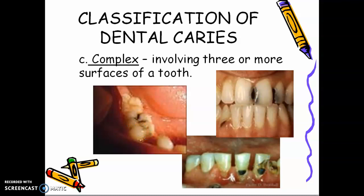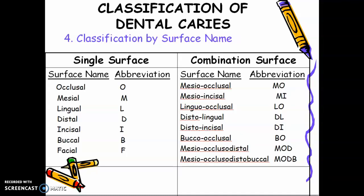Classification number four is classification by surface name. You have single surface: occlusal is O, mesial is M, lingual is L, distal is D, incisal is I, buccal is B, facial is F.